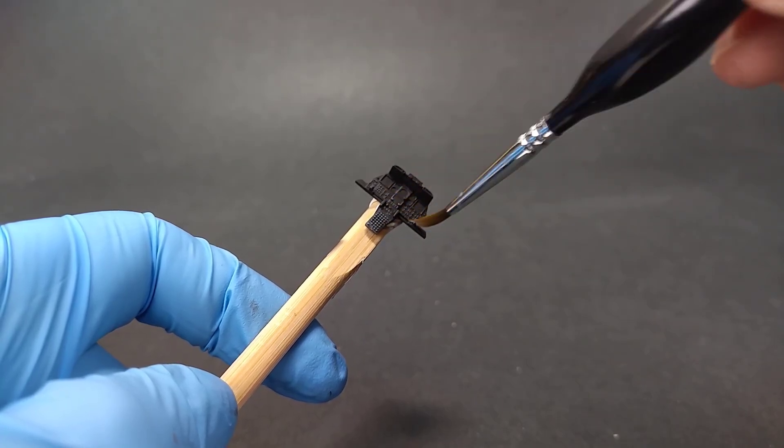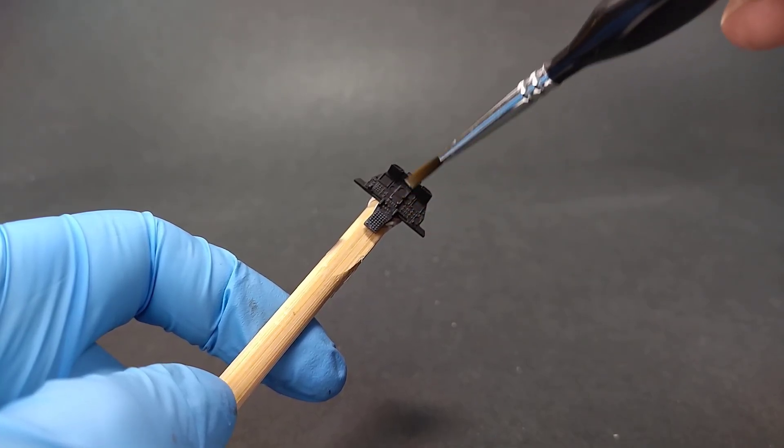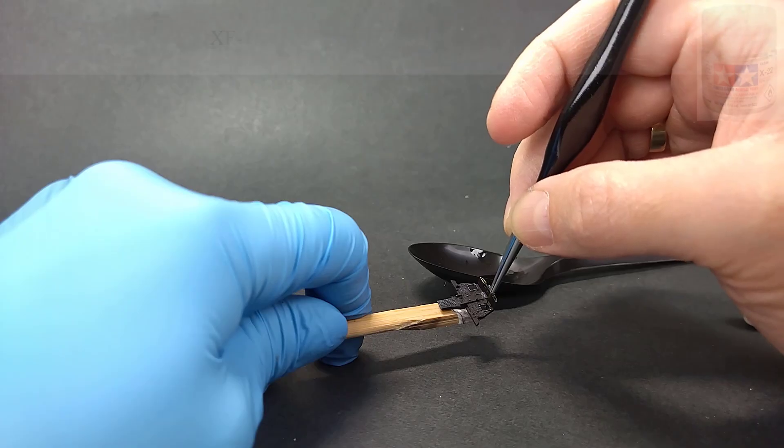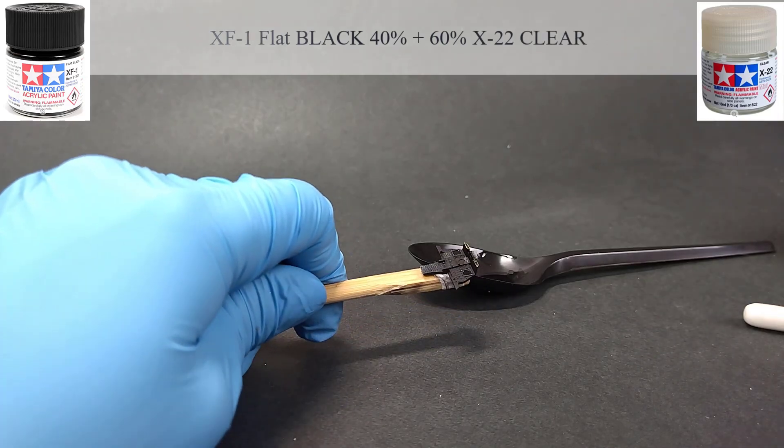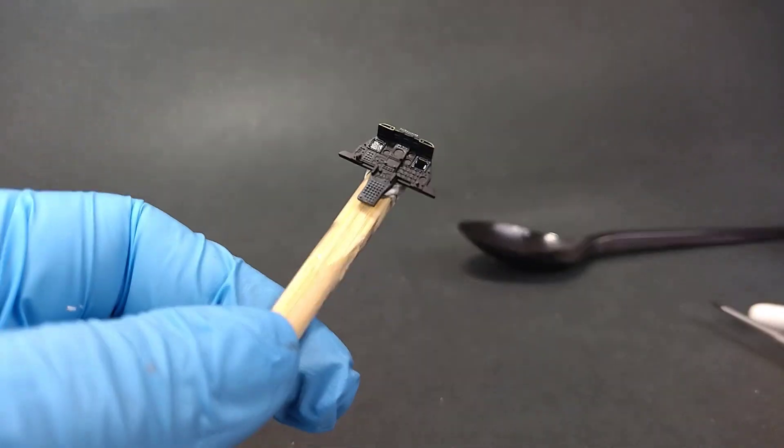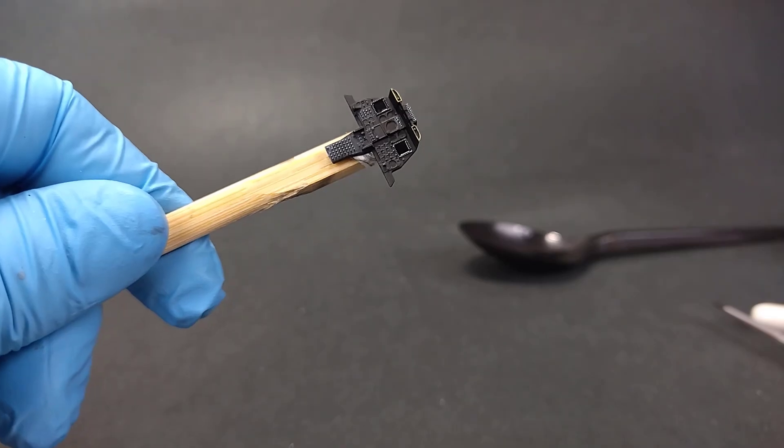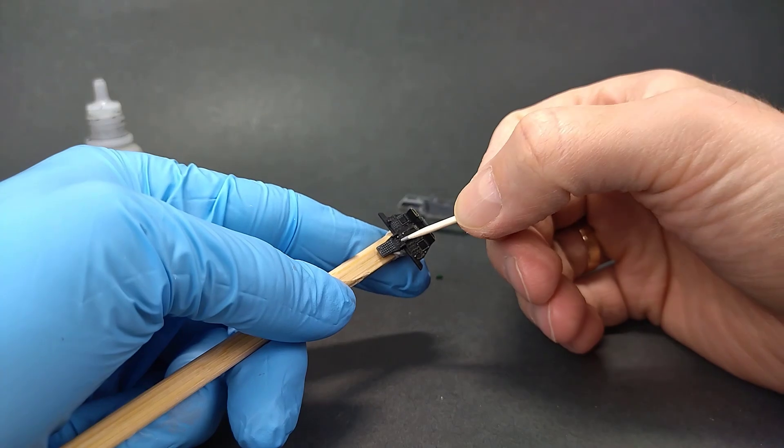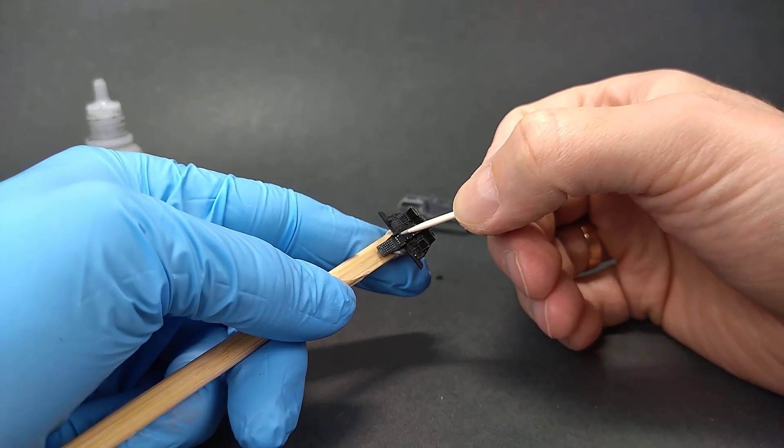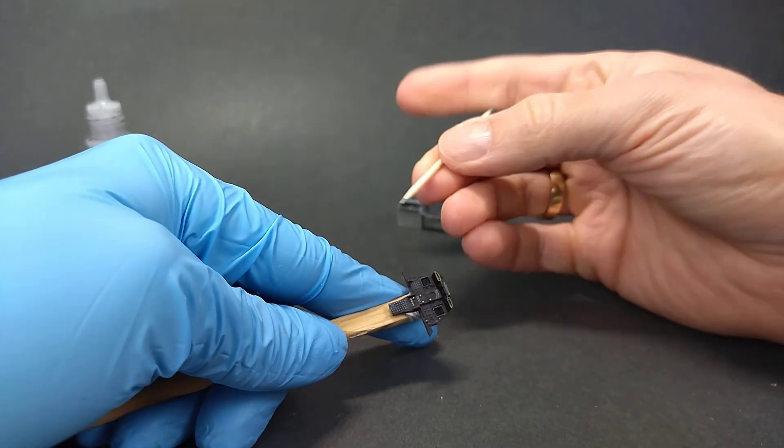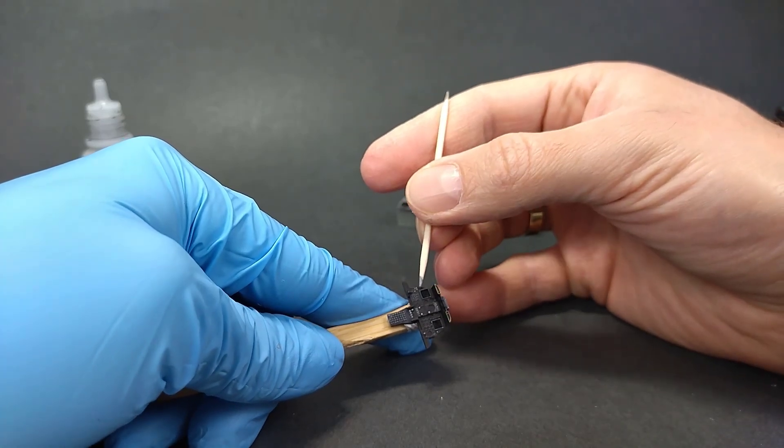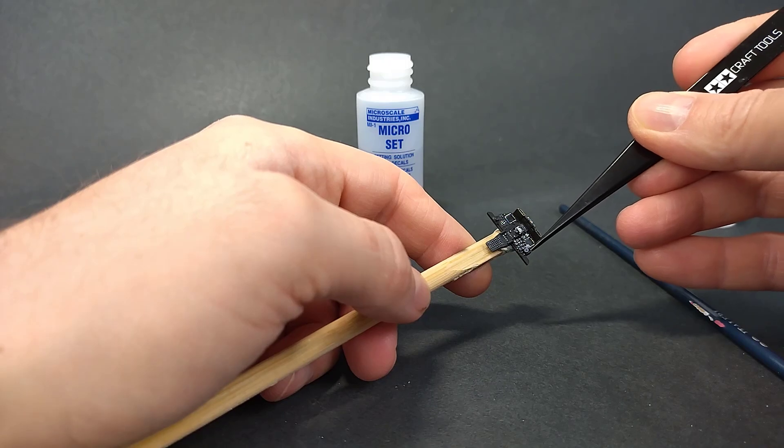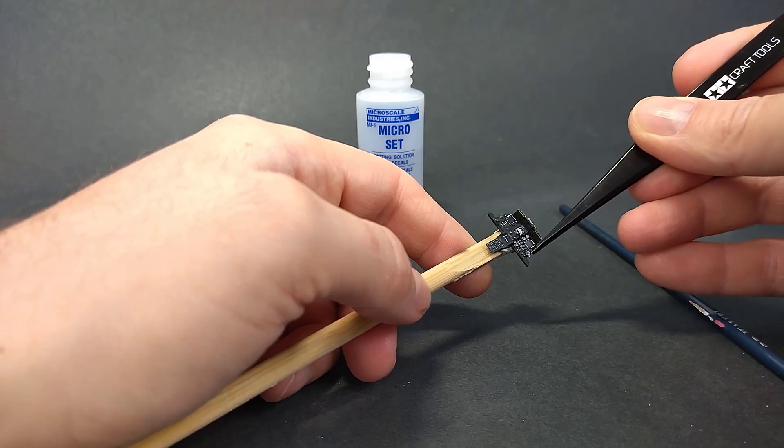I'm going to hand paint as much as I can and use part of the decals only for the most difficult elements. My model will be in the switched off mode, so I paint the monitors black. A toothpick makes a good tool to paint small buttons. A few decals from the kit I use when it's too hard to paint by hand.